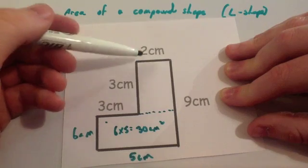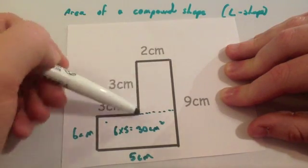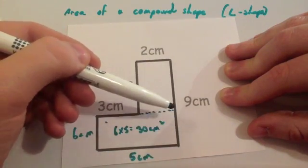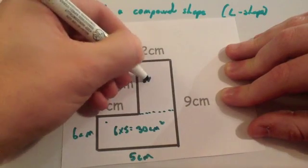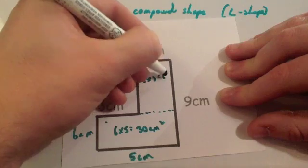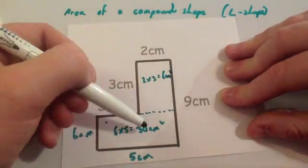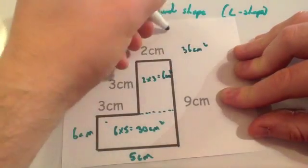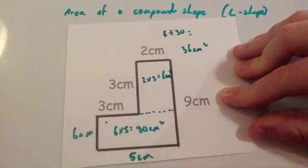Now for this one, the width of it is obviously 2 and the height of it is 3. Some people might make the mistake of going for 9, but 9 goes beyond where you've cut it. Okay, so it's going to be 2 times 3, which equals 6cm squared. And then the area of the whole thing would be 6 plus 30. So the area is 36cm squared.